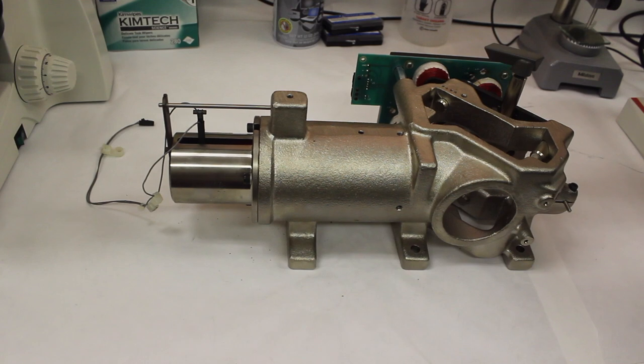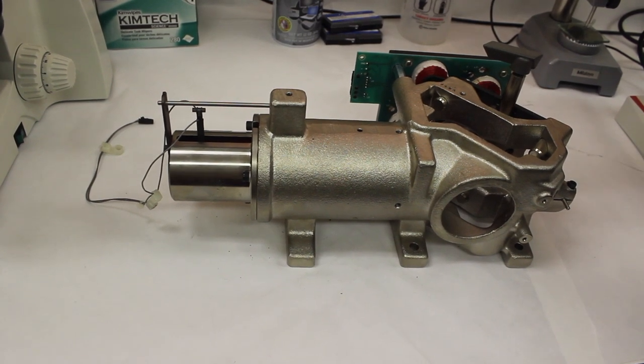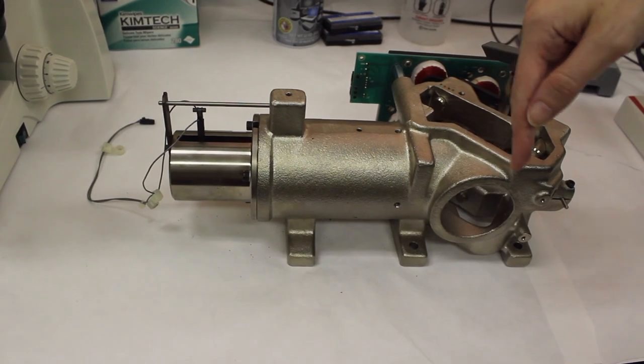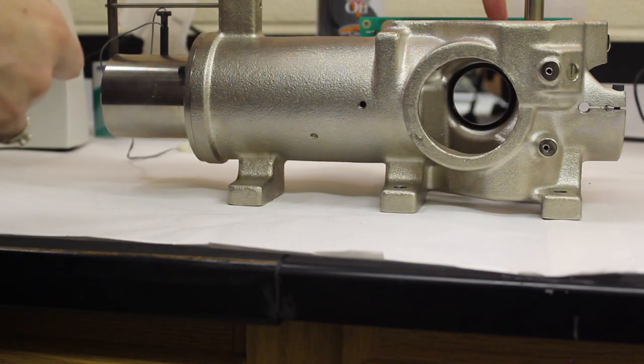So this is the interferometer, which is the main part of the IR spectrometer, and it has this hole or area where the infrared light comes into the interferometer.